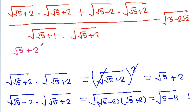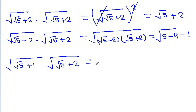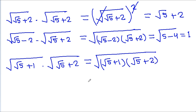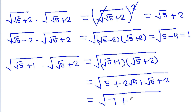So this is root 5 plus 2 plus 1, over a square root of (root 5 plus 1) times a square root of (root 5 plus 2) times a square root of (root 5 plus 2). Expanding: root 5 times root 5 is 5, plus 2 root 5, plus root 5, plus 2, so it is a square root of 7 minus 2 root 5 minus root 5, giving 3 root 5.